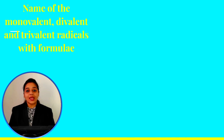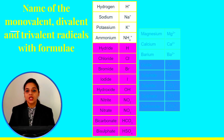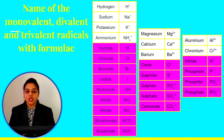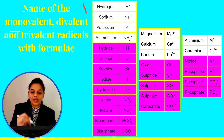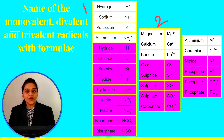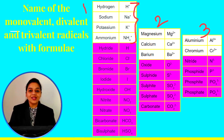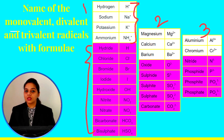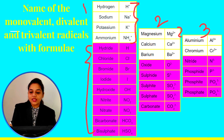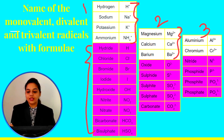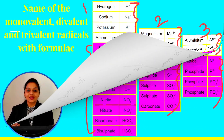These are commonly used radicals to make any chemical formula. First is monovalent, then divalent, and then trivalent. Monovalent means they have one valency, divalent means they have two valency, and trivalent means they have three valency. These are the monovalent cations and monovalent anions. Cations means positively charged ions and anions means negatively charged ions. These are the cations and anions for divalent radicals.